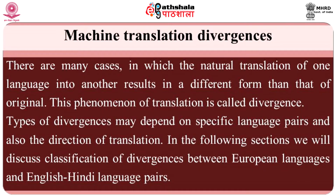There are many cases in which natural translation of one language into another results in a different form than that of the original. This phenomenon of translation is called divergence. Cross-cultural differences make problems of divergence between languages. Different types of divergences can be identified between different pairs of languages depending on individual structures of those languages. Types of divergence may depend on specific language pairs and also the direction of translation. In the following sections, we will discuss classification of divergences between European languages and English-Hindi language pairs.